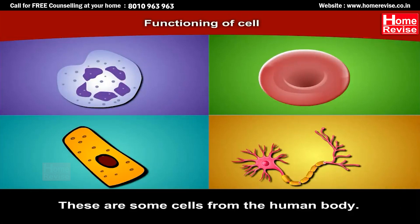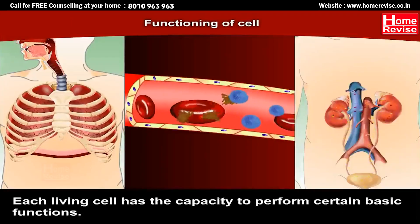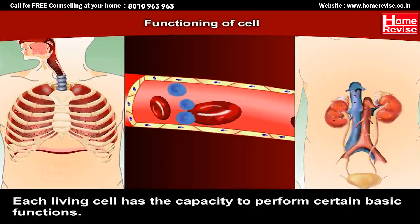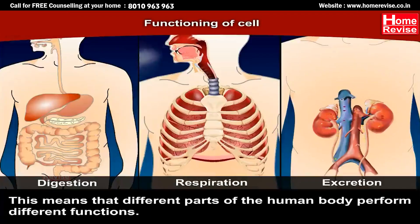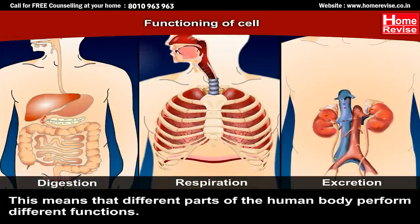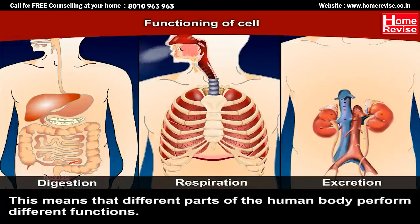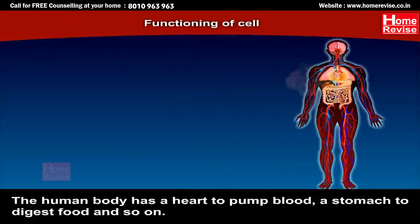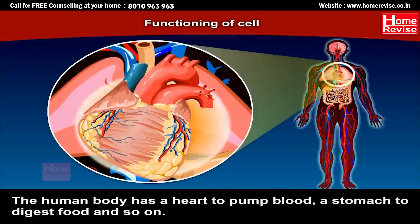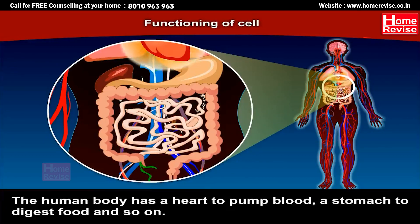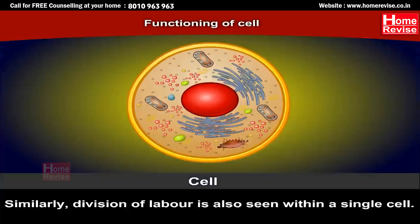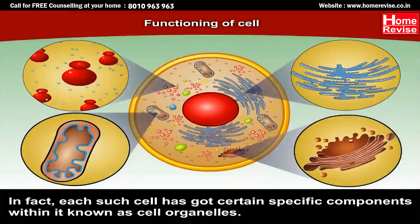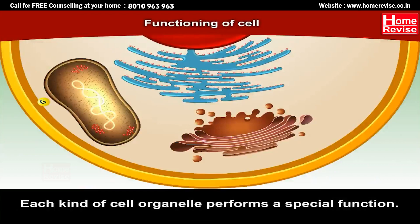These are some cells from the human body. Each living cell has the capacity to perform certain basic functions. Different parts of the human body perform different functions — the human body has a heart to pump blood, a stomach to digest food, and so on. Similarly, division of labor is also seen within a single cell. Each cell has certain specific components within it known as cell organelles.